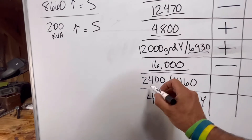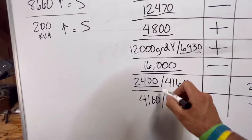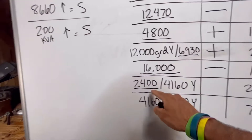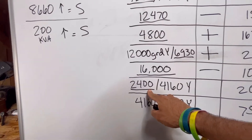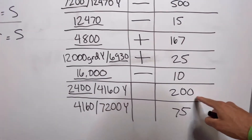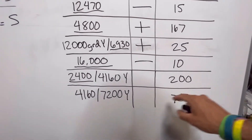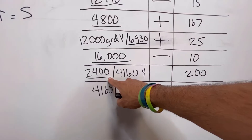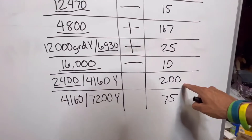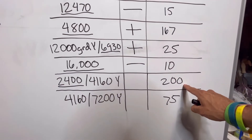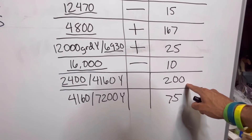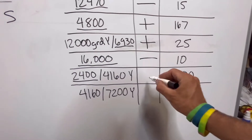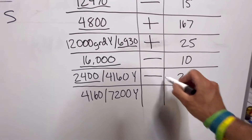Here: 2400/4160Y, 2400 volt input, 200 KVA. So I'm under 8660, but I'm at the KVA requirement — 200 KVA and above is automatically subtractive.